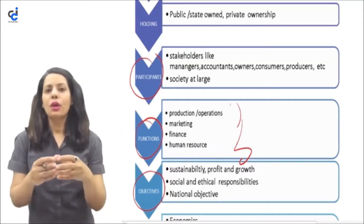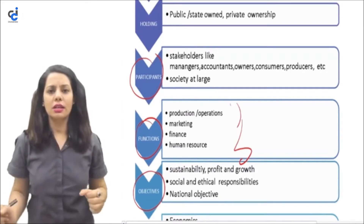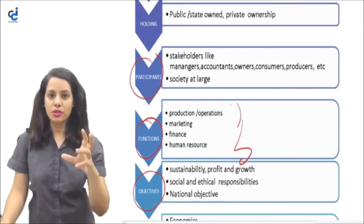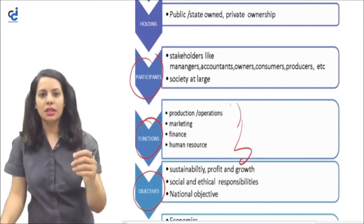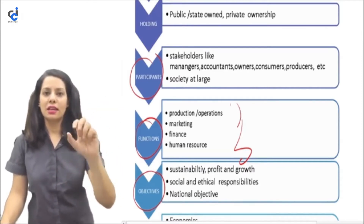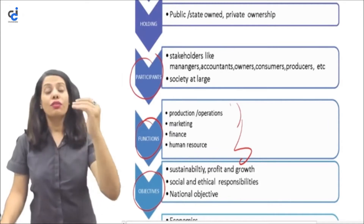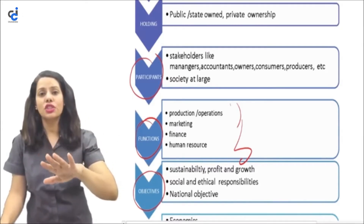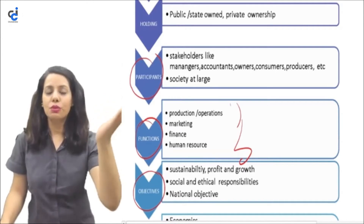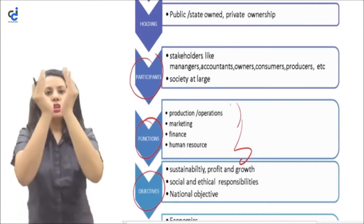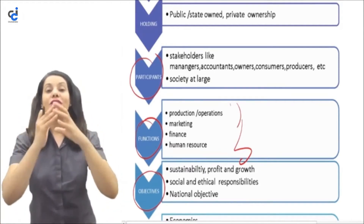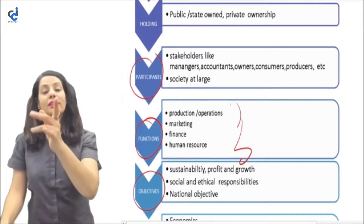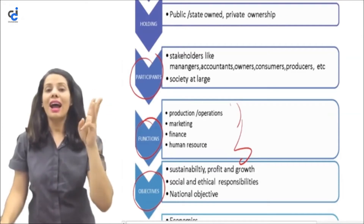For example, one person opens a small tuition class with five children. Gradually more children come, then he teaches 3–4 batches. That one room is not sufficient, so he moves to commercial space. Even that is not enough — he builds a college, then a university. So the business has to grow. Growth, sustainability, and profitability are the main objectives.